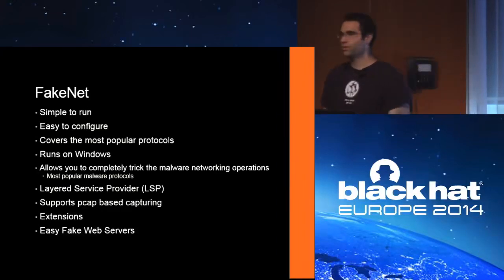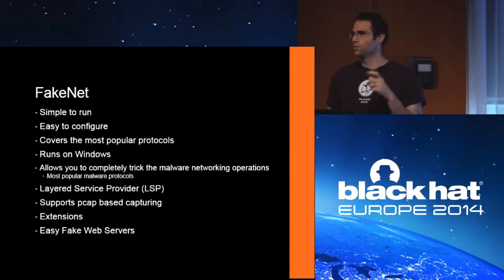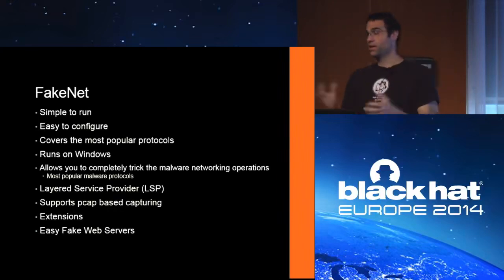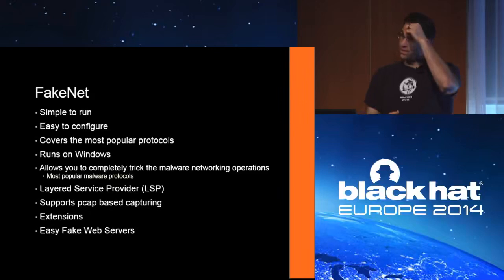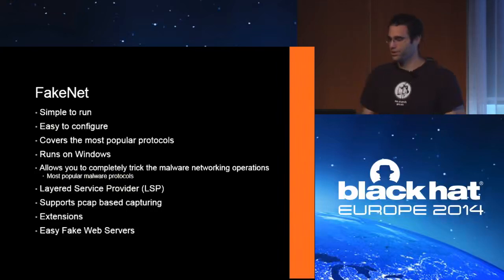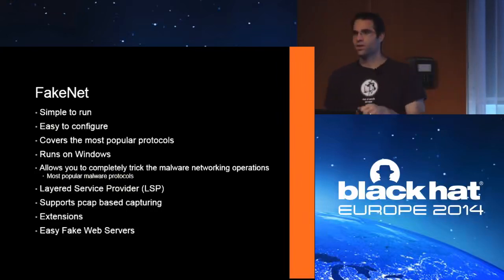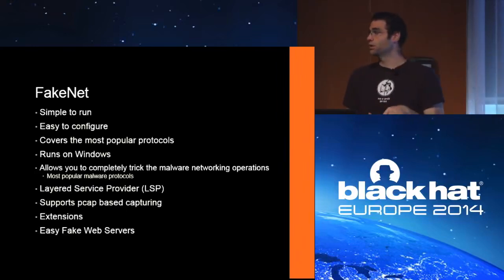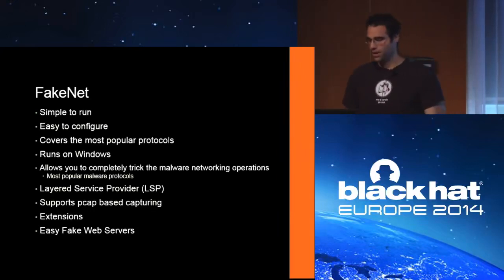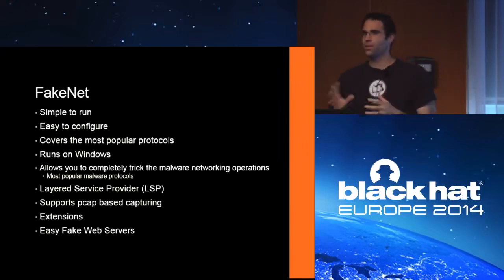I want to make sure you can check all networking operations. If malware doesn't do a DNS lookup, fake DNS doesn't see it. If it goes to a hard-coded address without proper routing setup, you're not going to see it on iNetSim. I used a Layered Service Provider — most of you are probably not familiar with it because it wasn't very popular at Microsoft, but it's pretty interesting. I also wanted to support PCAP captures. On Windows you can't do a PCAP capture on a local adapter — Wireshark won't do it. I wanted to make it extensible with an easy way to make a somewhat realistic web server.